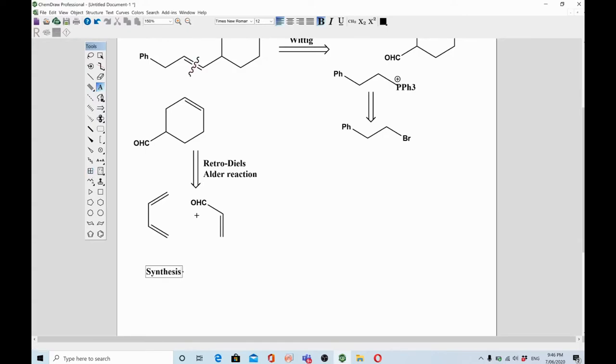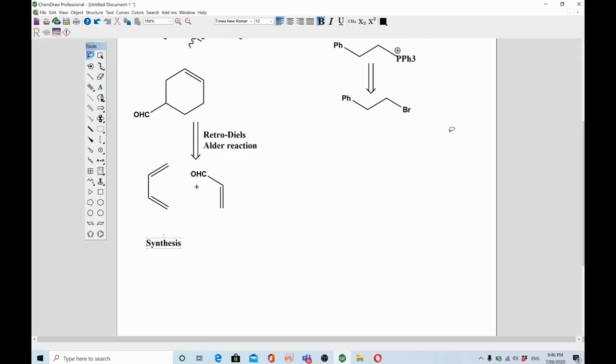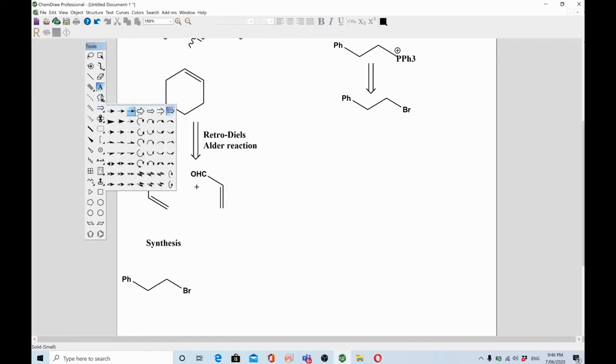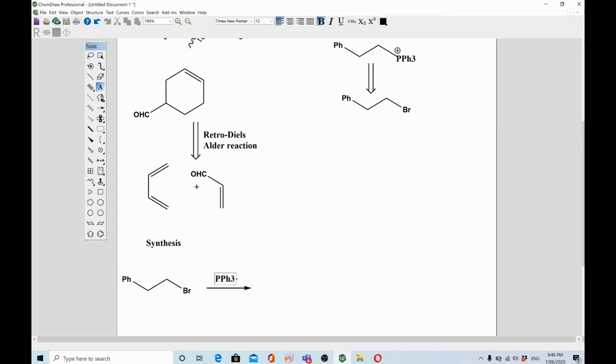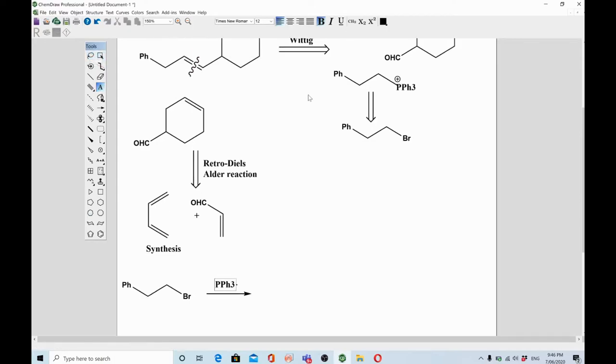This part where you will use this alkyl halide as a starting material—the easily available material. That's one condition of retrosynthetic analysis: you start from such a compound which is cheap, easily available, and environment-friendly.